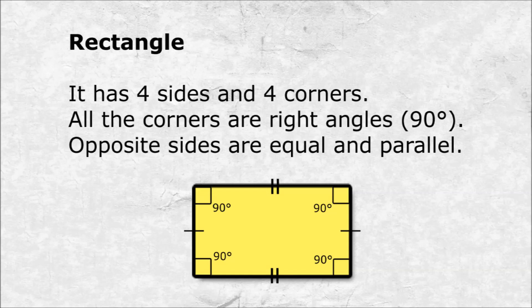Rectangle. It has four sides and four corners. All the corners are right angles, 90 degrees. Opposite sides are equal and parallel.